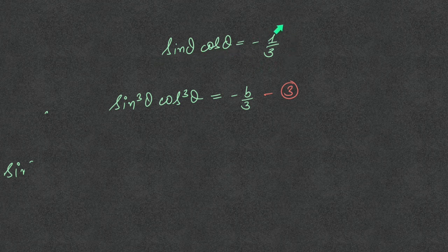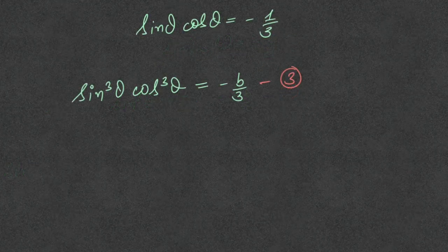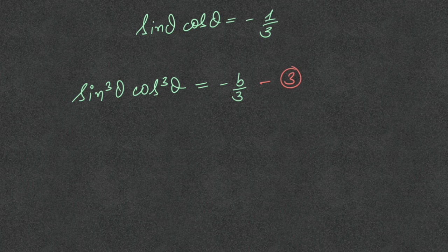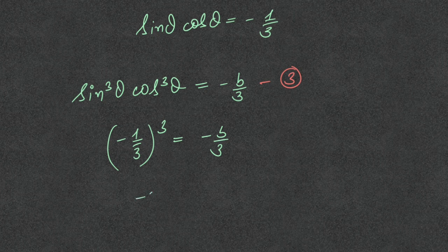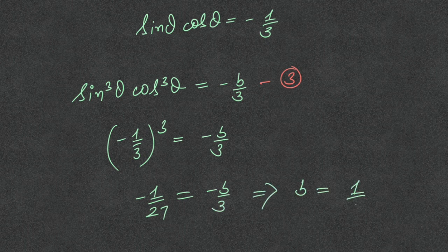Using sinθcosθ = -1/3 in equation 3, this becomes (-1/3)³ = -b/3, which gives -1/27 = -b/3, and eventually b = 1/9.